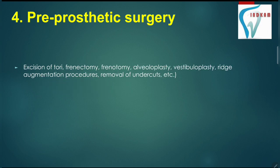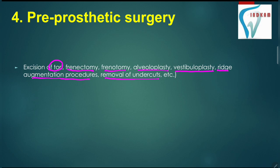The next step is pre-prosthetic surgery. In this step, excision of tori, frenectomy, frenotomy, alveoplasty, vestibuloplasty, ridge augmentation, and removal of undercuts — anything which is required in preparing for the denture. If the patient has any undercut, high frenum, or tori present which will hinder the denture in future, we have to remove that by performing pre-prosthetic surgery.